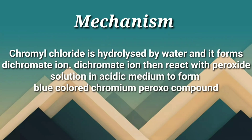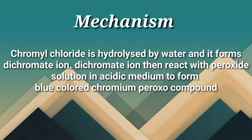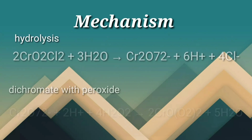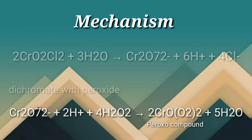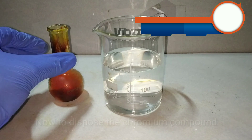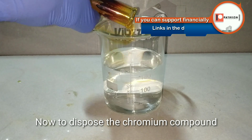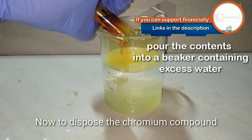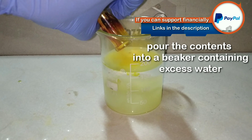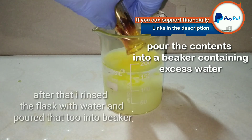This reaction took place in two steps. In the first step, chromyl chloride underwent hydrolysis to form the dichromate ion. In the second step, the dichromate ion reacted with the peroxide in acidic solution to form the chromium peroxide compound, which is blue in color. Since hexavalent chromium compounds are carcinogenic, we are going to detoxify them.